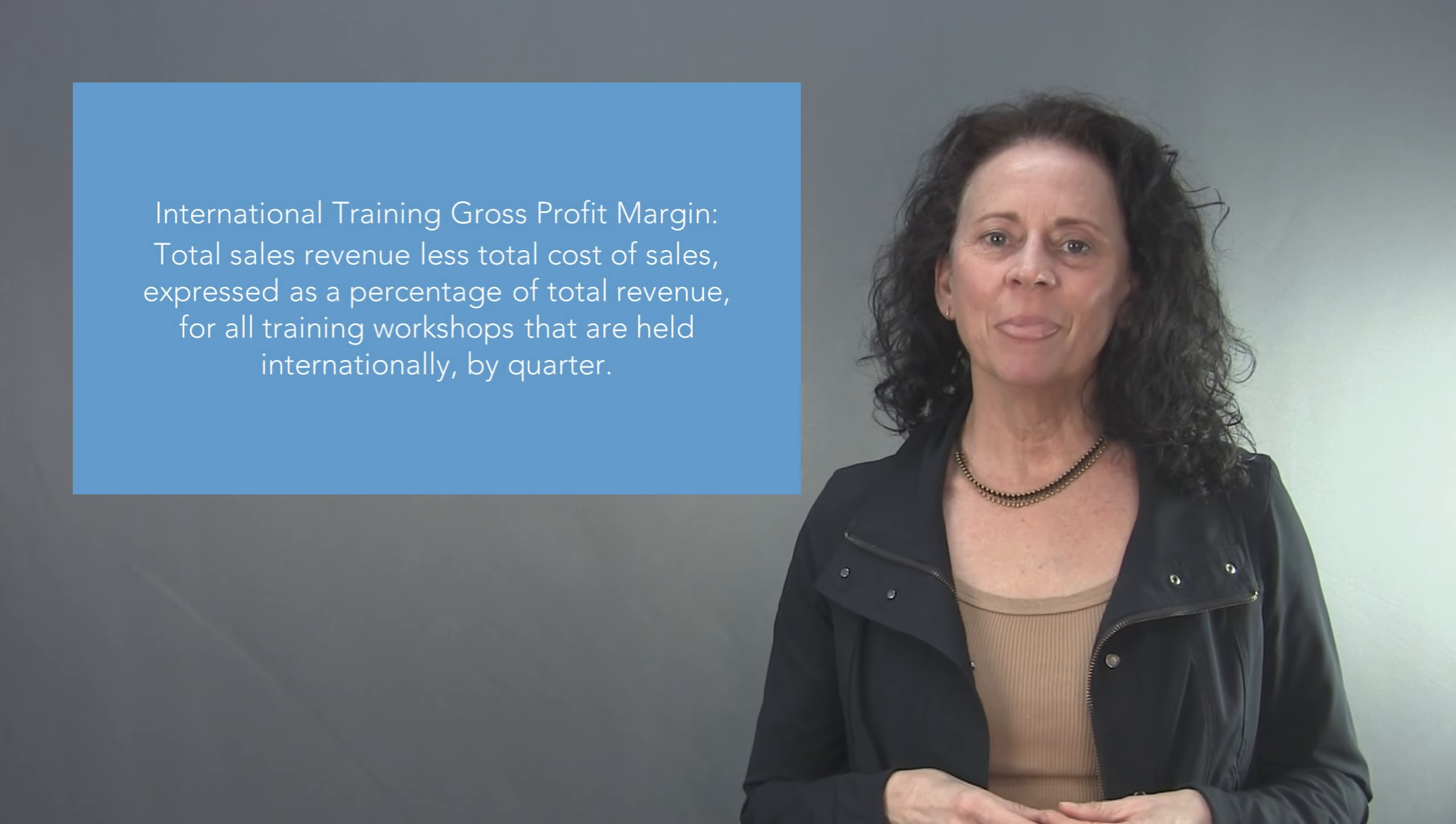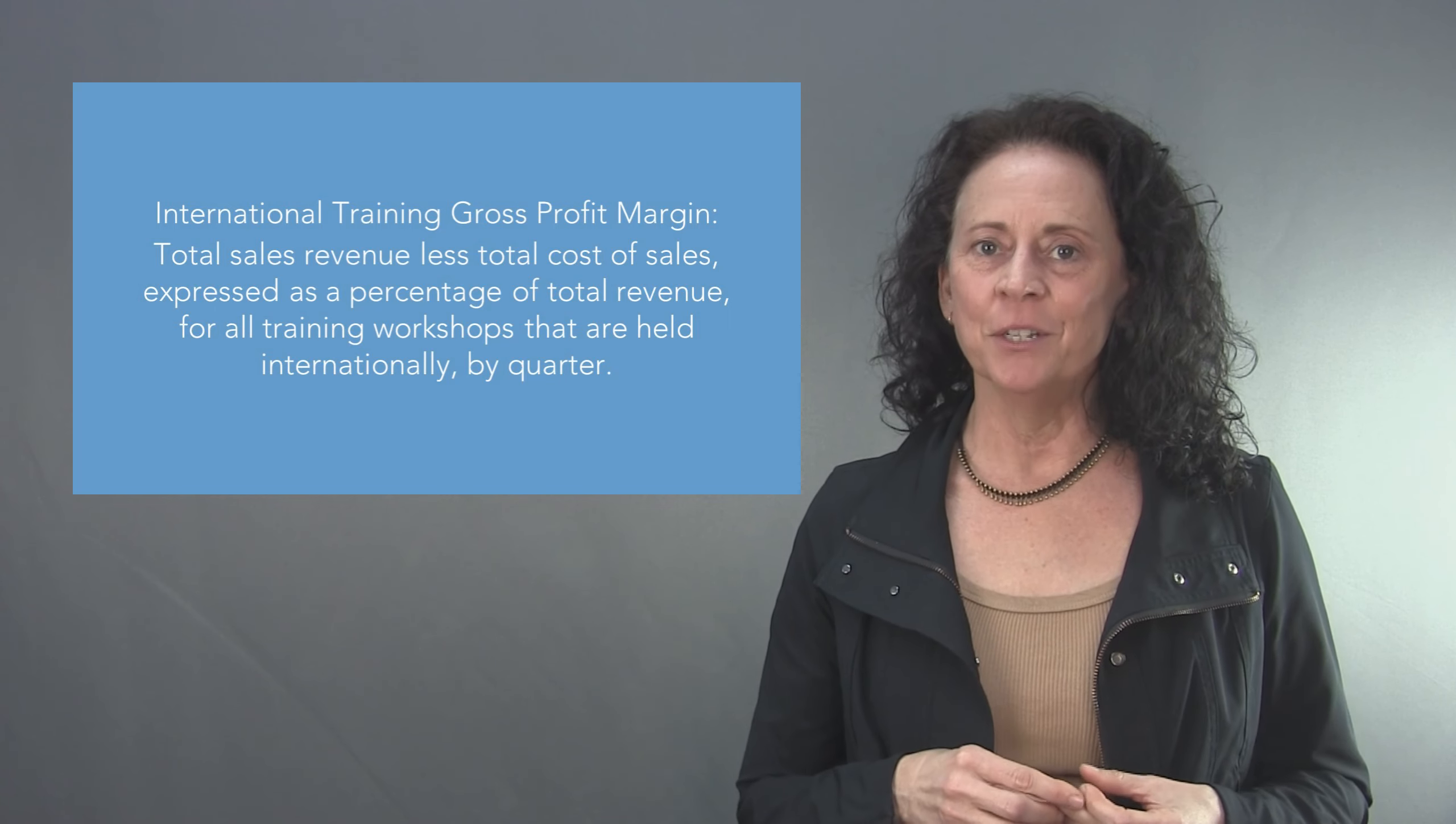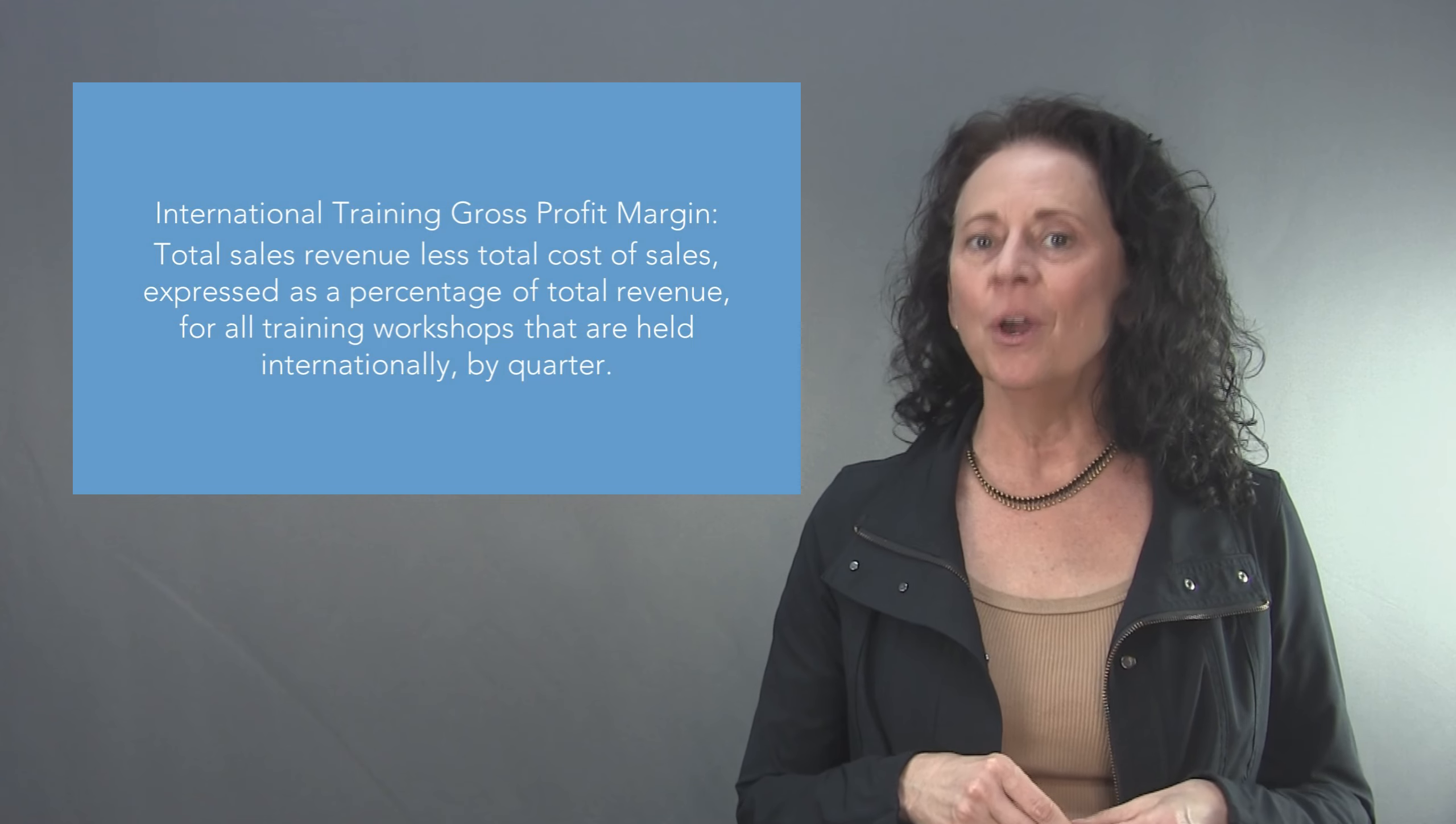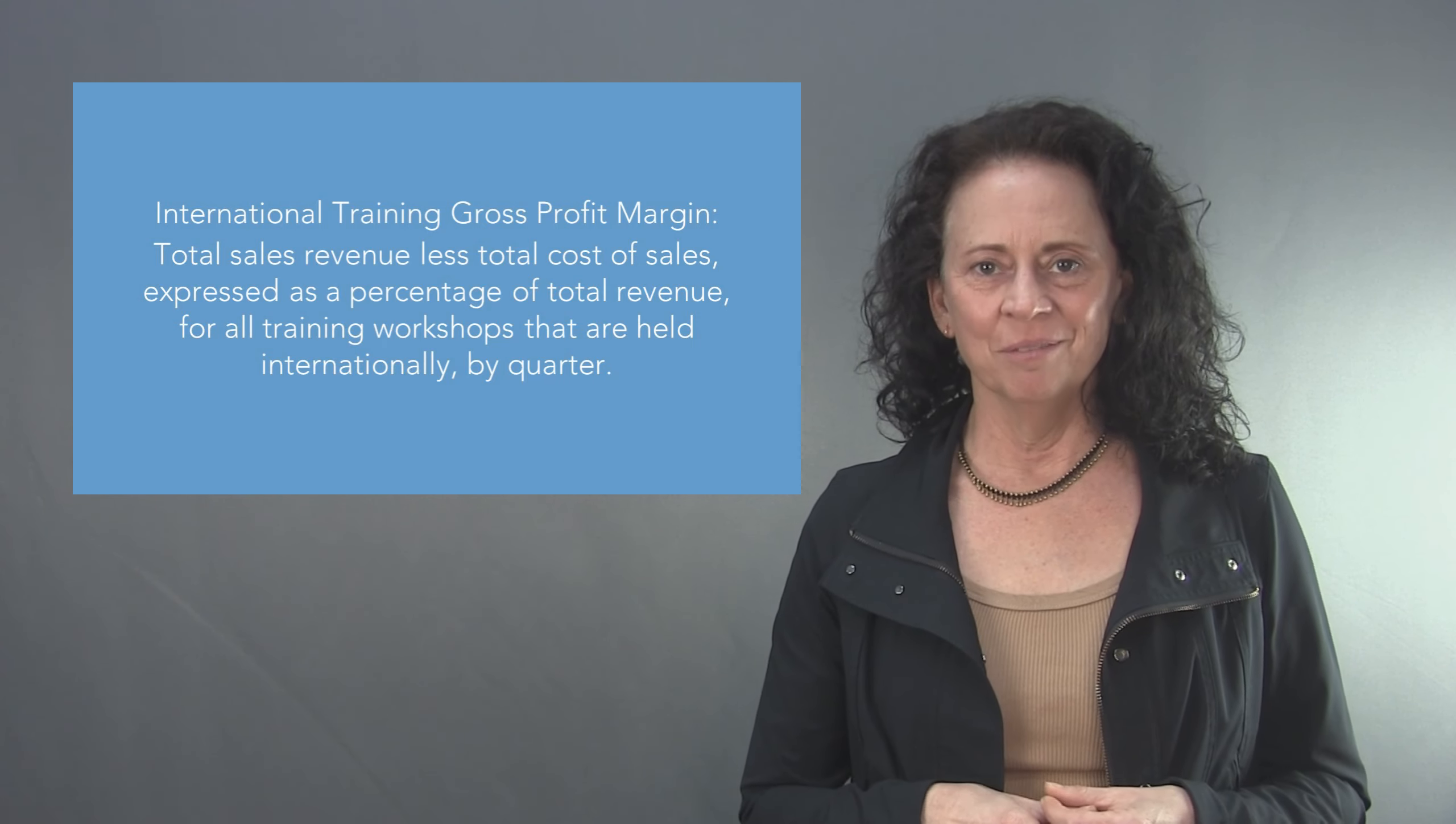A good example of complexity is this performance measure: international training gross profit margin, the total sales revenue less the total cost of sales expressed as a percentage of total revenue for all training workshops that are held internationally by quarter. But always start simple and small when you're trying something new and that way you'll lay a solid foundation of know-how and you'll be much better prepared to tackle the more complex KPIs.